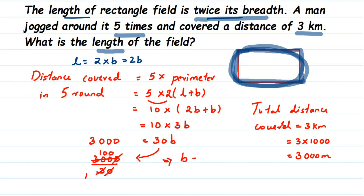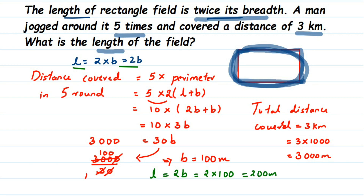Therefore, b equals one hundred meters. Now to find the length, the relationship given is length equals twice its breadth, so l equals two b. Substituting, l equals two into one hundred, which is two hundred meters. That's it! I hope this question is clear. If you have any other questions or doubts, you can drop a comment. Thank you so much for watching.